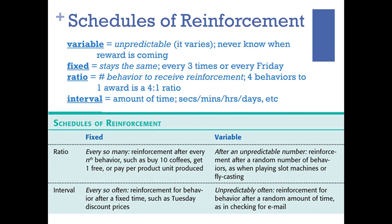A fixed ratio is reinforcement after every set number of behaviors, such as buying ten coffees and getting one free. A variable ratio is unpredictable — after an unpredictable number of behaviors, like a slot machine. There's an unpredictable number of lever pulls required to hit a jackpot. If a slot machine operated on a fixed ratio, casinos would make no money because you'd know exactly how many times to put money in to win. It has to be variable — unpredictable — because there's that chance it can happen without a set expectation.